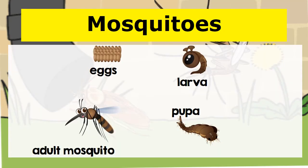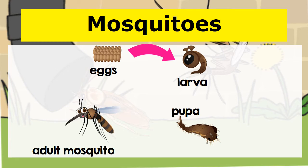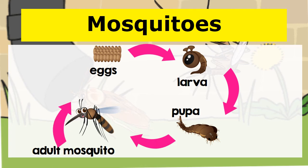The mosquito — here is the life cycle of the mosquito. We know that the mosquito has four stages, and it starts with the egg. Then it goes to the larva, then to the pupa — sometimes called the nymph. And then we have the adult mosquito, and the cycle begins again.